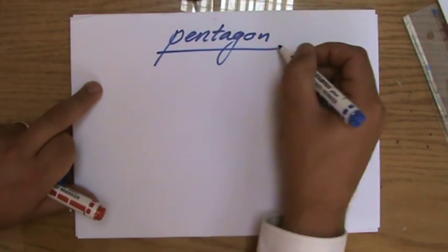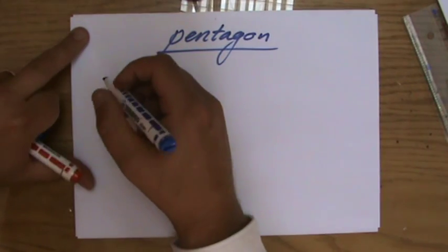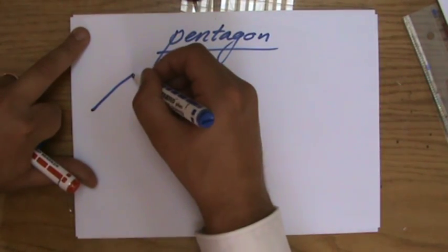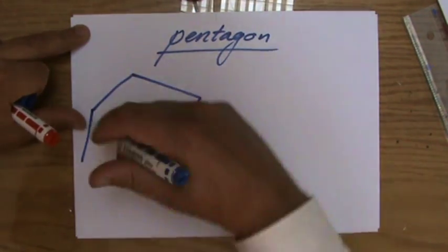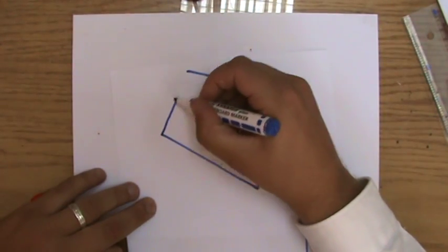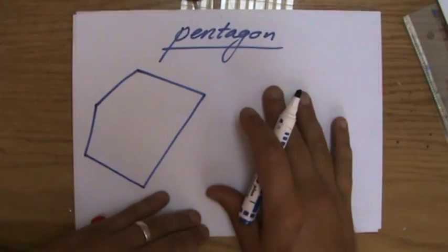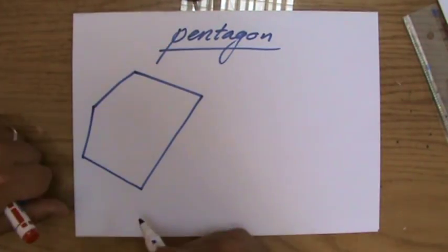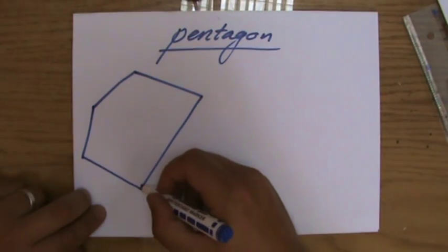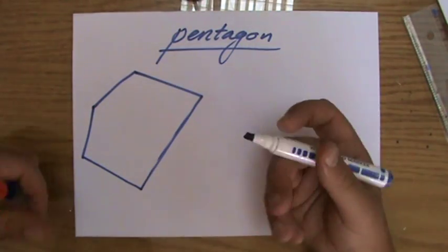Now, a pentagon has five sides. So that could be one, two, three, four, and then I connect this one, five. So this is a pentagon. One, two, three, four, five. It's a five-sided polygon, where all the lines are straight.